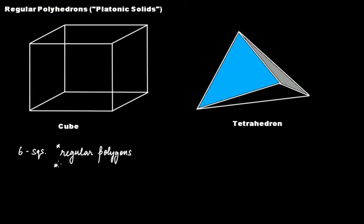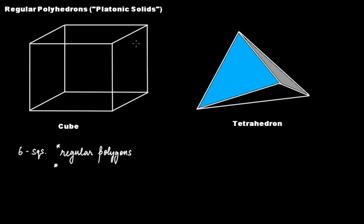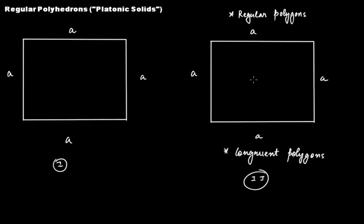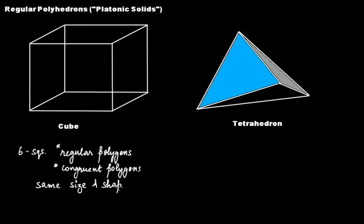The second criterion is that if you take out this front face from the cube and then focus on the right side face and separate it too — are these two squares not congruent? They are congruent. So the second criterion is that the faces are regular polygons and should also be congruent, meaning all faces have to be of the same size and shape. All faces have to be square and of the same size; only then can they be congruent.